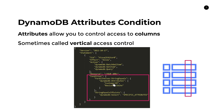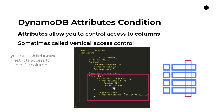Below that, there's an additional required condition: StringEqualsIfExists on the condition key DynamoDB:Select with the value SpecificAttributes. This bottom section tells DynamoDB that we want to restrict access to specific attributes or specific columns. The key takeaway: DynamoDB:Attributes restricts access to specific columns, and that extra DynamoDB:Select statement tells Dynamo which attributes to use to restrict access.